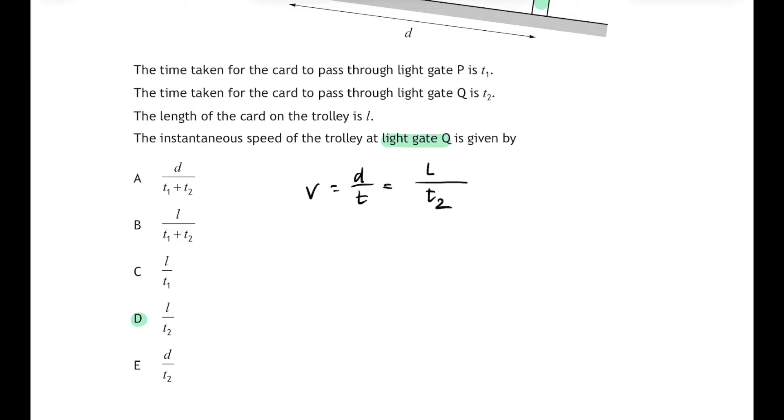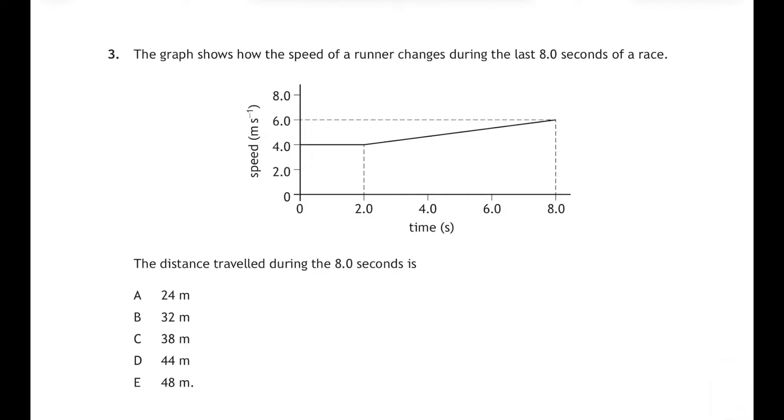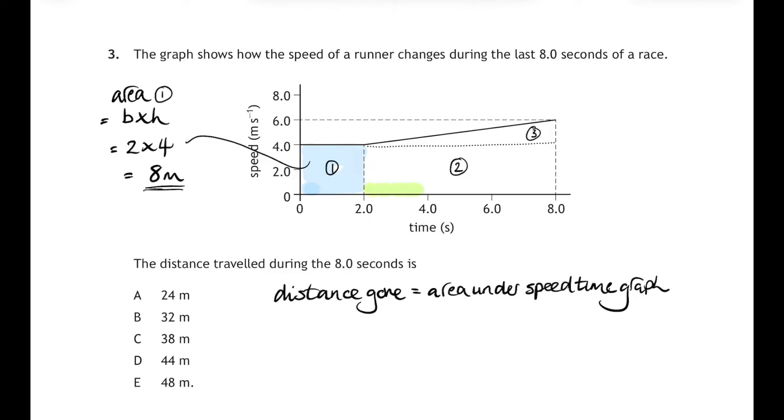On we go then, question three. This is graphs of motion. The graph shows how the speed of a runner changes during the last eight seconds of a race, and we have to work out the distance traveled during the eight seconds. Well, distance gone is the area under the speed-time graph. So if we chop this into three simple shapes—two rectangles and a triangle—and we work out the area of each one and then add them up, we will get the total distance gone. So area one is a rectangle, so the base times the height: two times four is eight, that's eight meters.